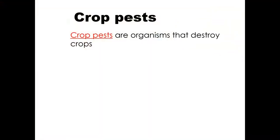What are crop pests? Crop pests are organisms — all living organisms — that destroy crops. Don't mix them up with vectors in humans or animals. Vectors spread disease germs, whereas crop pests destroy crops.